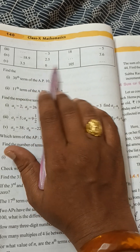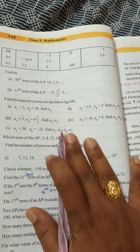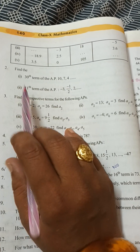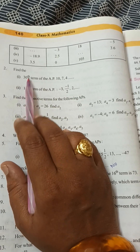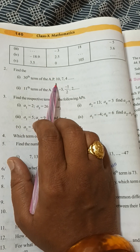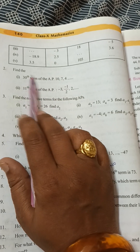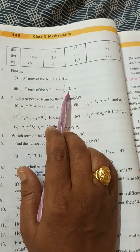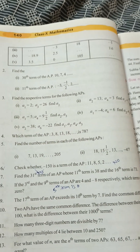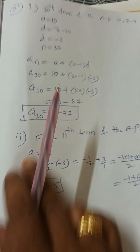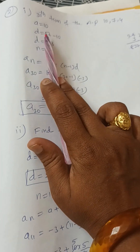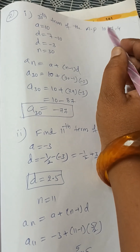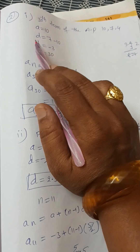Next, the second question: find the 30th term of the AP 10, 7, 4, ... and also find the 11th term of another AP. For the first part, in the series the first term a = 10.